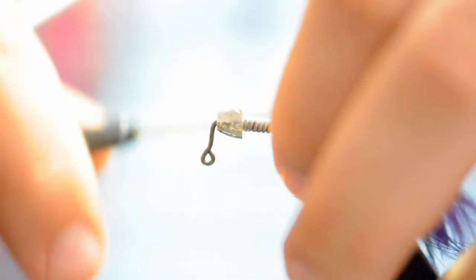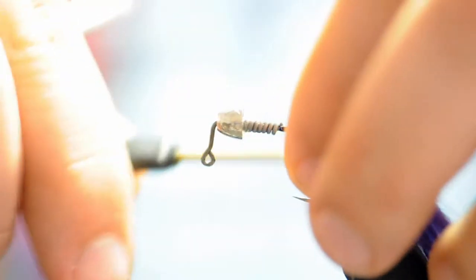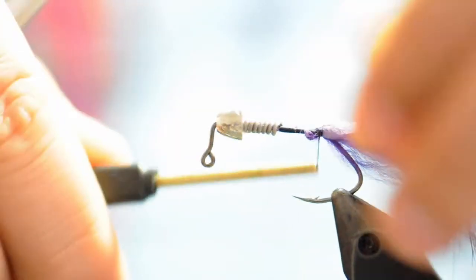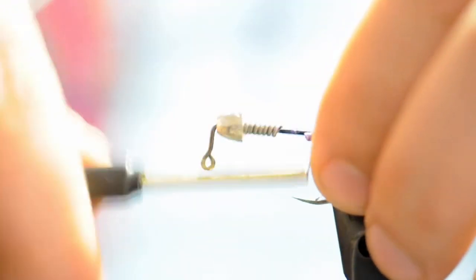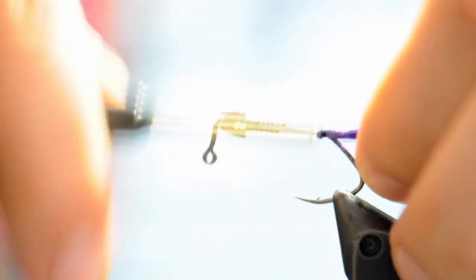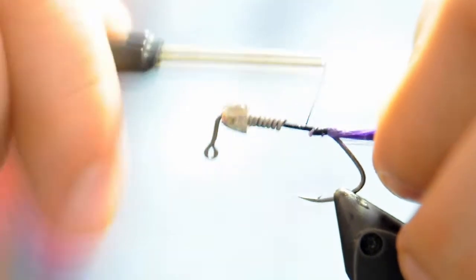And now I'll take and basically just put a couple wraps on that tag end of the zonker and tighten it up and align it so that it's sitting level with the bottom of the fly.